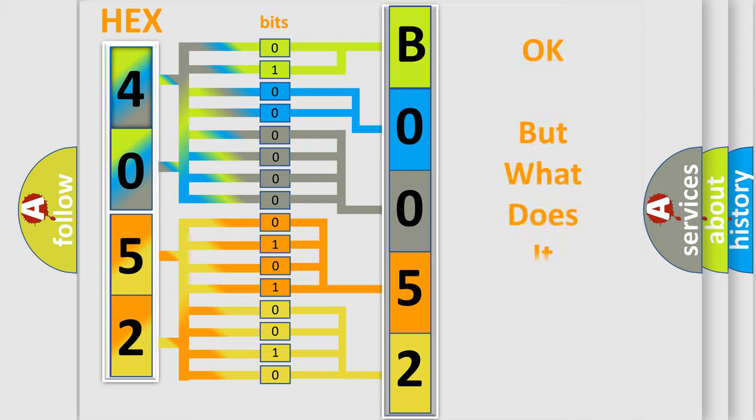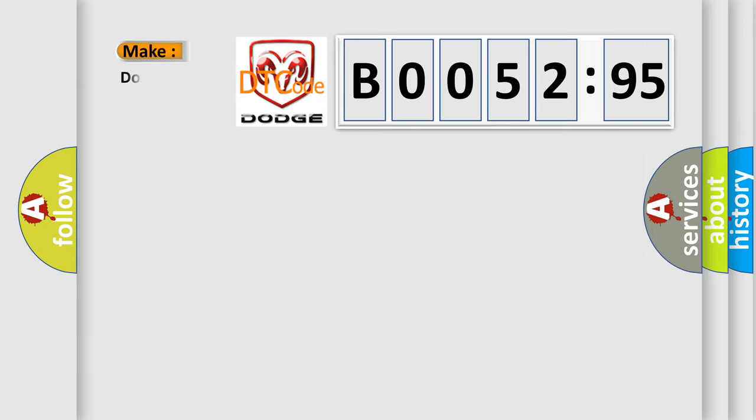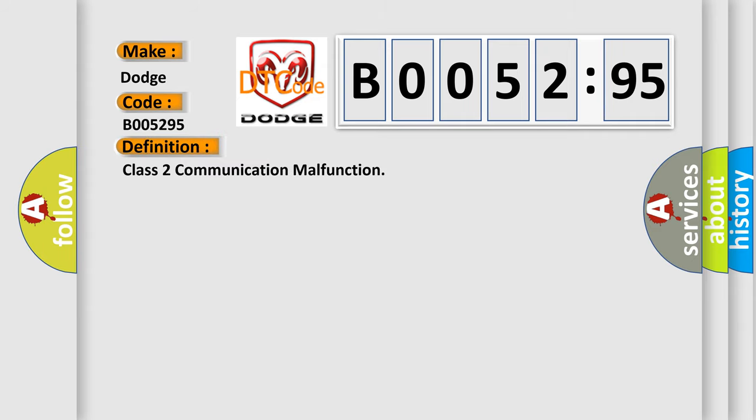The number itself does not make sense if we cannot assign information about what it actually expresses. So, what does the diagnostic trouble code B005295 interpret specifically for Dodge car manufacturers? The basic definition is Class 2 communication malfunction. And now this is a short description of this DTC code.